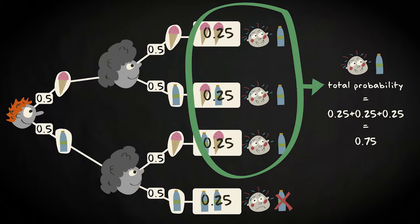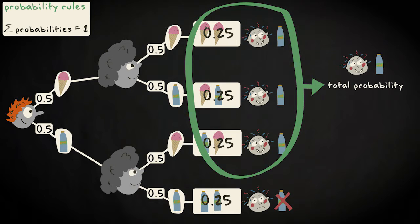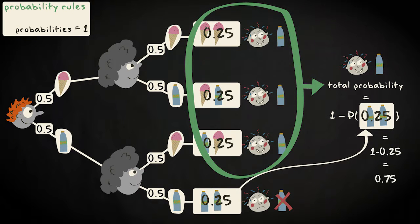A quicker way to make the latter calculation is by using the fact that the total of all probabilities must sum to 1. So 1 minus the probability of two bottles of soft drink being sold gives the same result.